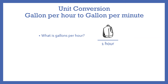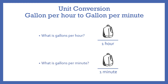Gallons per hour is a unit of flow rate that is used in the water and wastewater industry to rate some equipment and processes. Gallons per minute is another very common unit of flow in water and wastewater. Most pumping equipment is evaluated and specified based on gallons per minute. In most problems and applications, both of these units will be abbreviated. Gallons per hour is abbreviated as GPH, and gallons per minute is abbreviated as GPM.